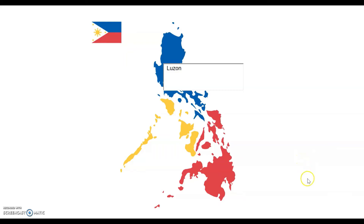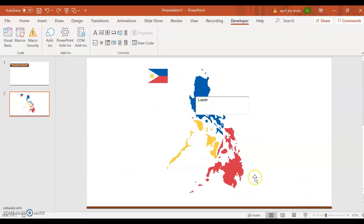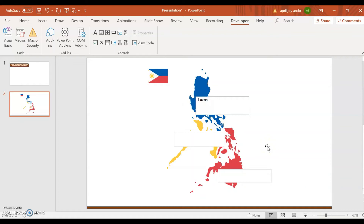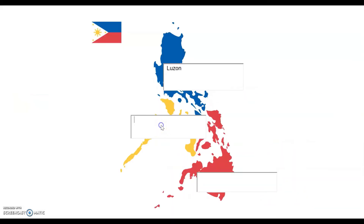Let's go back to the Slides and insert more text boxes — one more. During your Slideshow presentation, you can ask the audience to name the three main geological divisions of the Philippines. So when we go back to the Slideshow, this will be Visayas, and the third one is Mindanao.